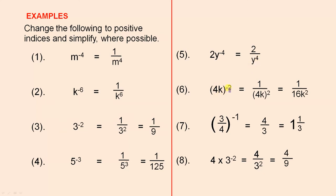When you have brackets like this, the power, or the index, outside applies to both of the terms. So it's actually 1 over 4k all squared, which is 1 over 16k squared.